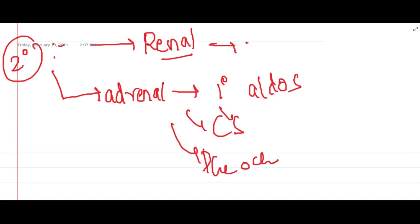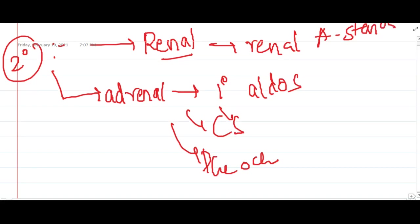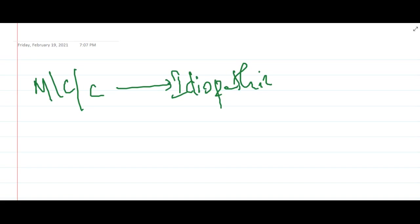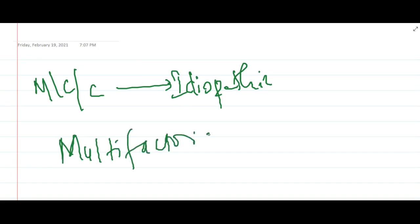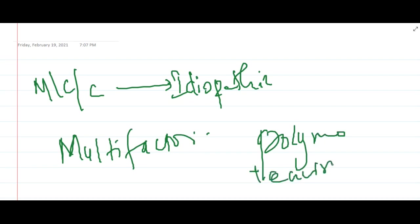In renal disease, renal artery stenosis is another identifiable cause. In primary or idiopathic hypertension, this hypertension is actually multifactorial, associated with genetic polymorphisms and interaction from the environment.